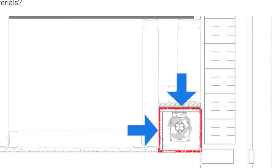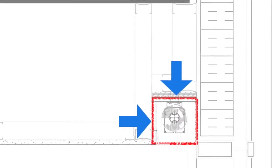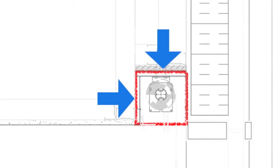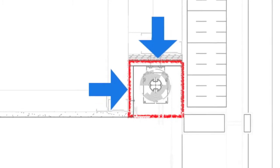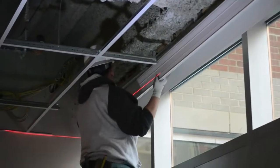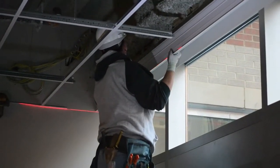What if all you had to install was this area shaded in red, and in one single pass? How would this impact construction schedules, labor, and materials? Well, that what-if is now a reality with Armstrong Axiom building perimeter systems.